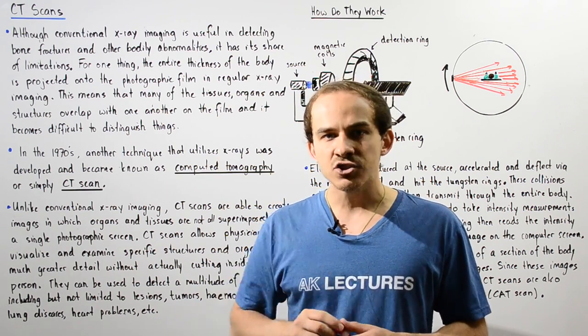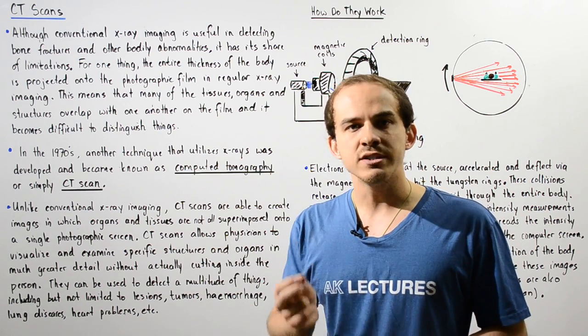In the 1970s, a second type of technique that also uses x-rays was developed and this became known as the CT scan, where CT stands for computed tomography. The word tomo means cross-section or slice and the word graphe means to form an image.